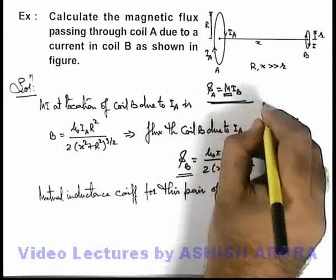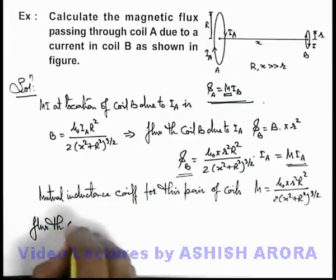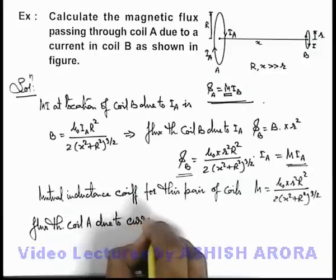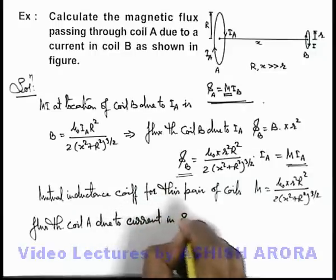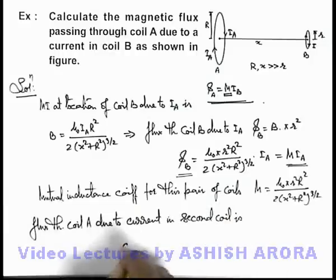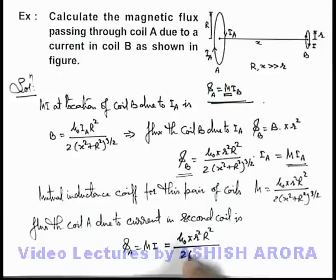Now using this relation we can directly find out flux through coil A due to current in the second coil. Φ_A we can write as M·i where i is the current flowing in coil B. So this can be written as μ₀πr²R² / 2(x² + R²)^(3/2) multiplied by the current.